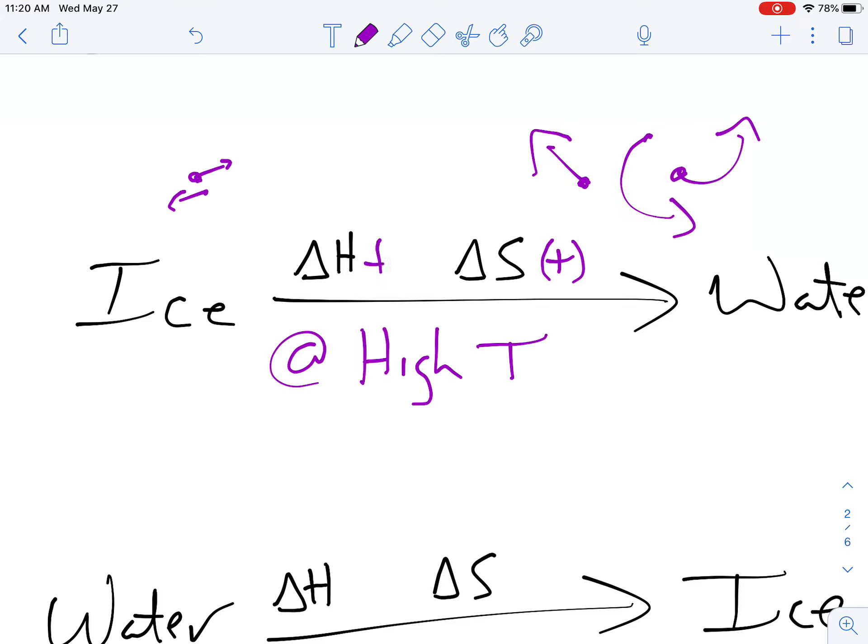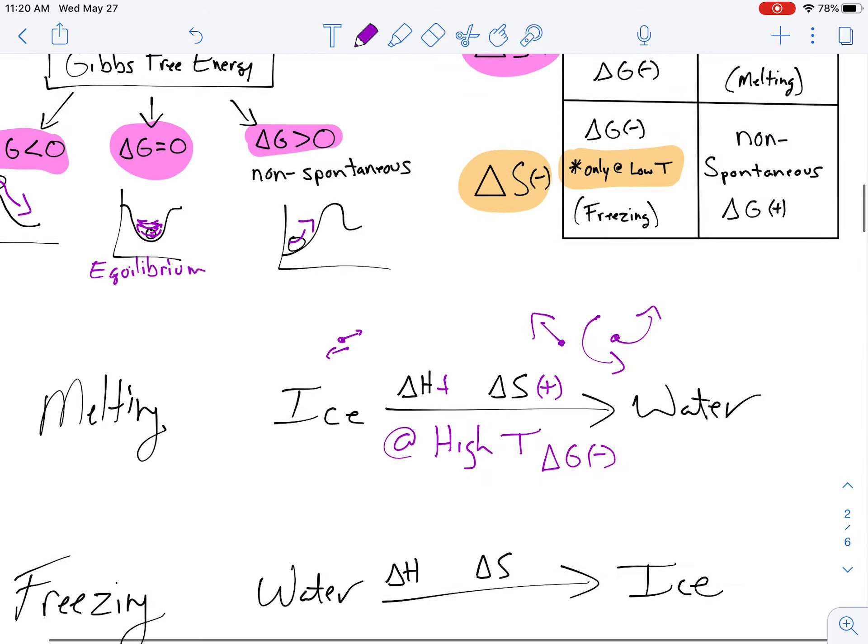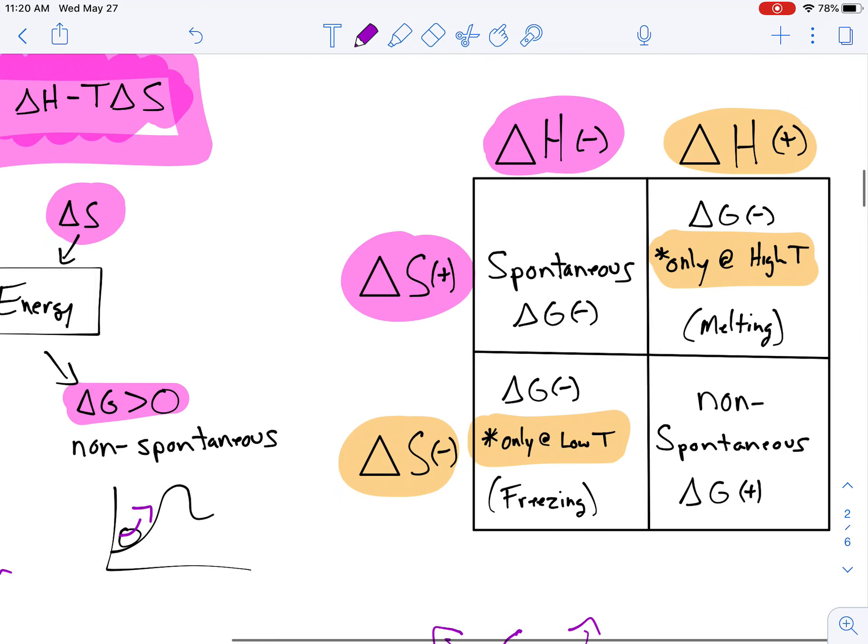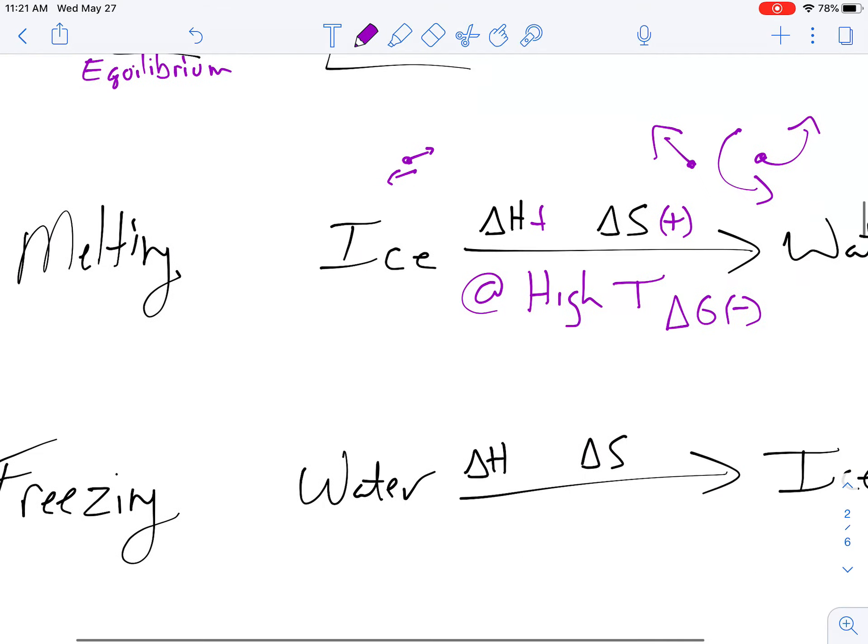So, let's see if that makes sense in terms of our delta G. We said that this would be, at high temperatures, delta G would be negative here. So, positive and positive. Oh, here's my positive and positive. Only at high temperatures. That's melting. That works out.